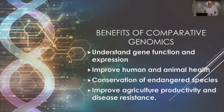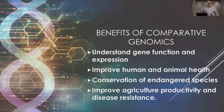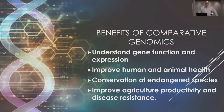Comparative genomics helps us understand gene function and expression because we are comparing gene function and expression in species that may be very different. It helps us improve human and animal health because we can use the human genome to predict genomic issues in animals related to health, just as we can use genomic information from laboratory or domestic animals to improve human health. This is called the one health philosophy.